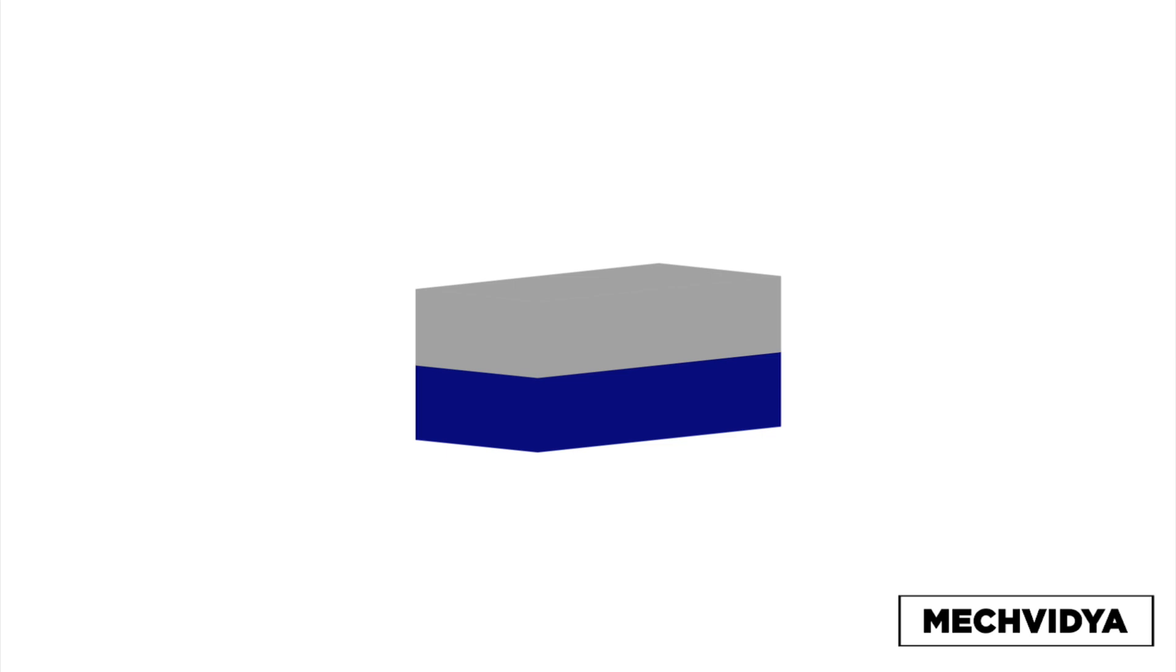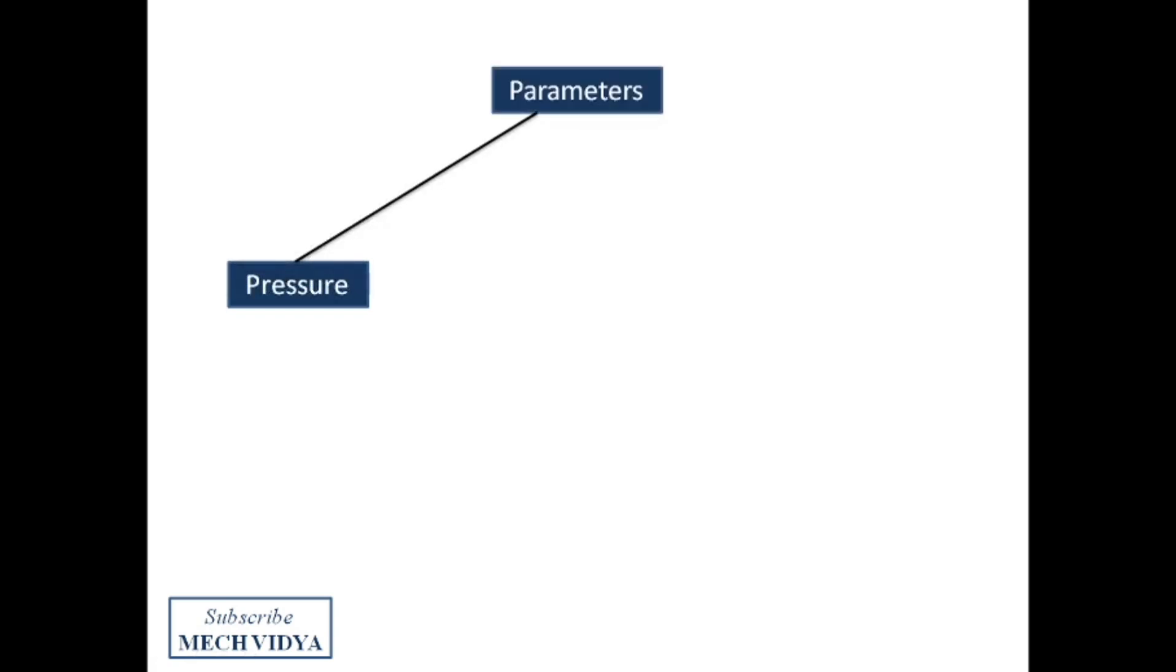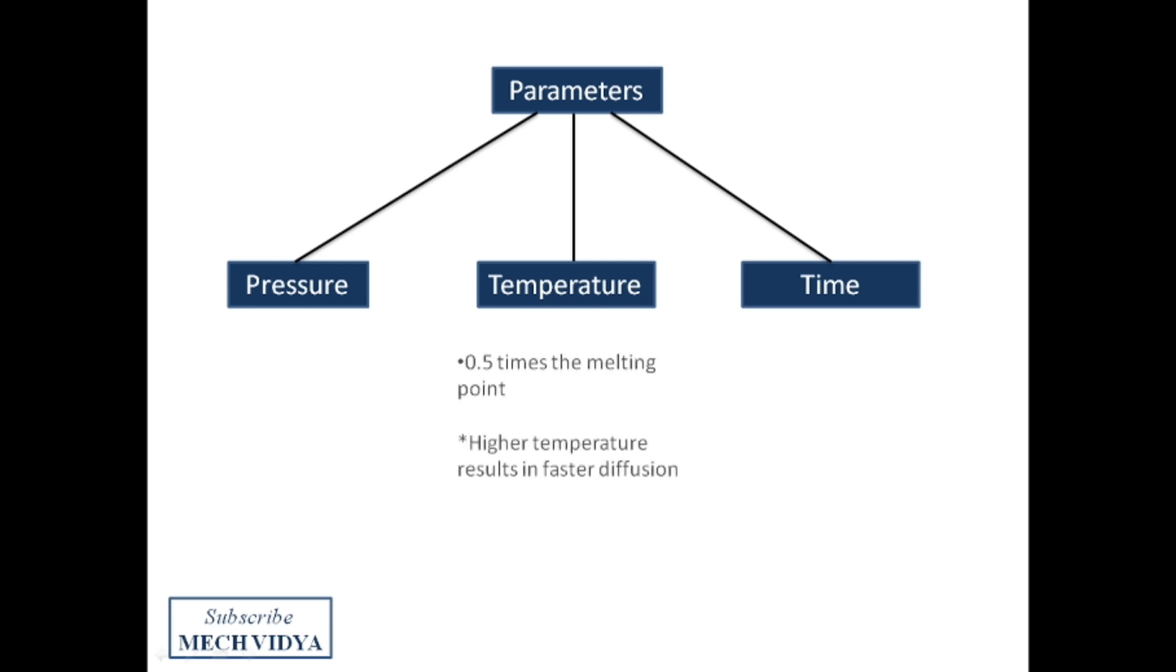Now let us try to discuss the three most important parameters of diffusion welding: pressure, temperature, and time. While the temperature can be anywhere between 40 to 50 percent of the material's melting point, the pressure and time change from material to material.